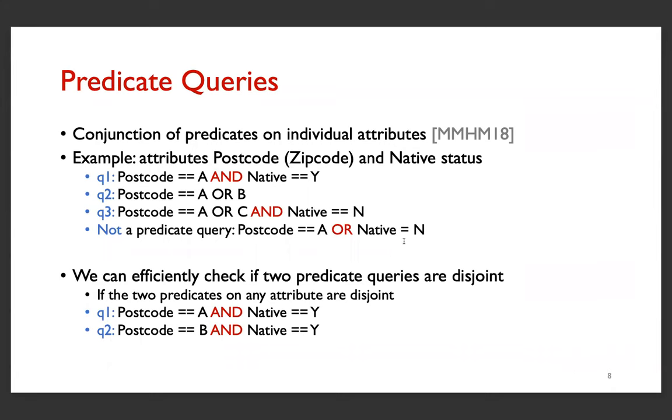In order to tame this complexity, we focus on a subset of queries called predicate queries. These are defined as conjunctions of predicates on individual attributes. So q1, q2, q3 are examples of predicate queries. On the other hand, the query postcode equals A or B is not a predicate query because it's actually a disjunction. The reason to use predicate queries is that we can check if any two queries are disjoint by looking at the predicates individually. If on any attribute the predicates are disjoint, then the queries are disjoint, as in this case.